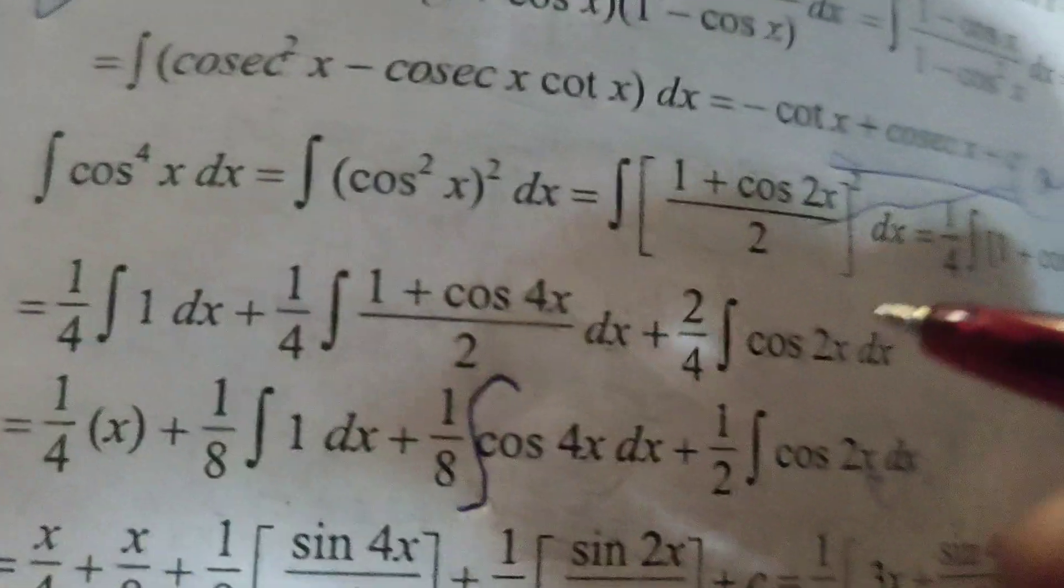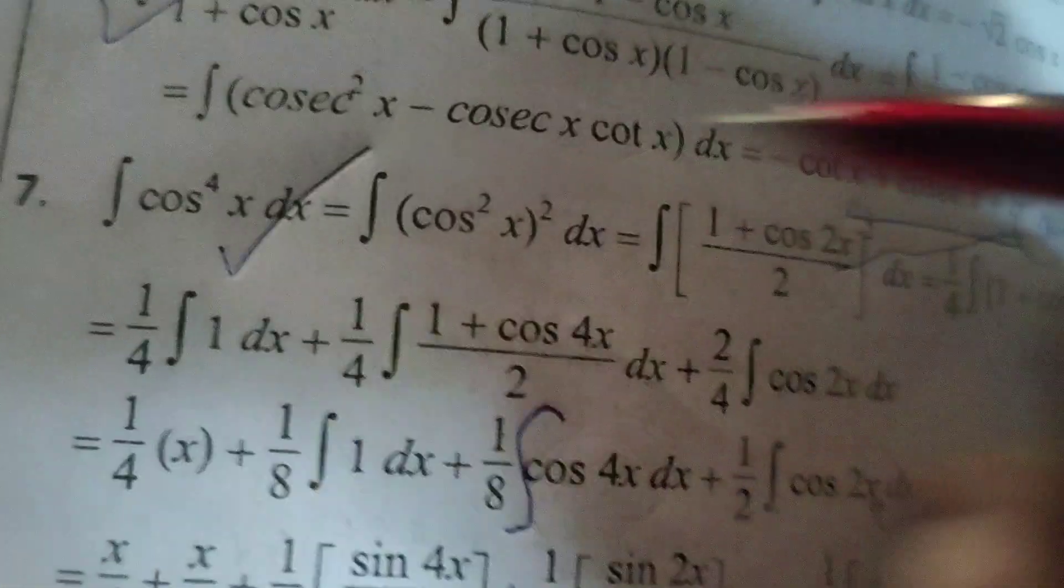Now 2 sin 2x plus c. This is the solution for the given evaluated integral, integral cos to the power 4x dx.